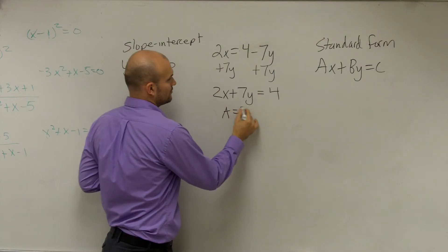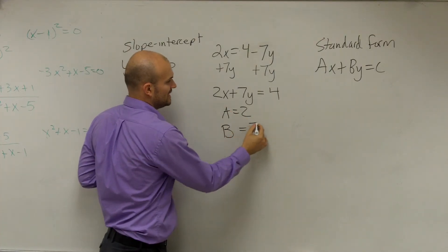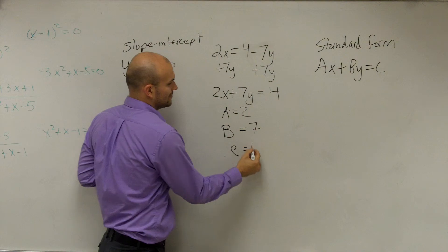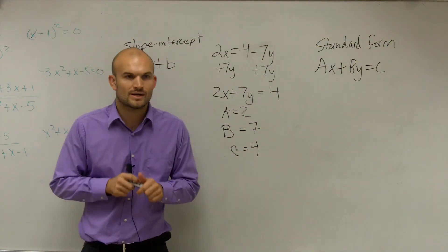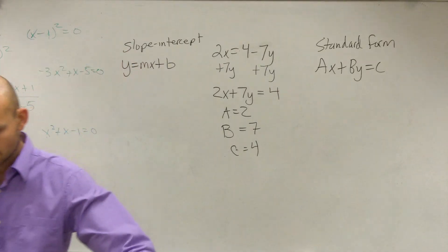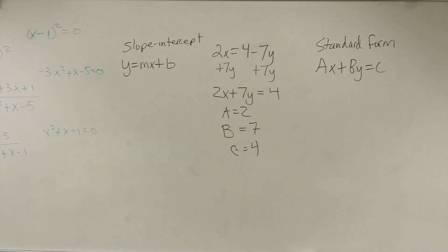So you could say A equals 2. You didn't have to do this, but it's just nice to know it. B equals 7 and C equals 4. That's all you have to do. Just write it in standard form. You didn't have to, but I just want to show it to you.